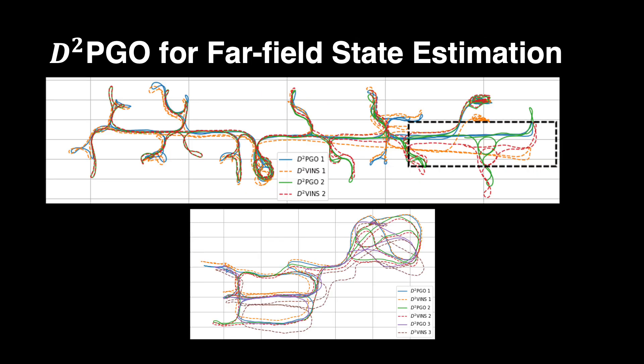As shown in the figures, D-Square VINS drifts after a long time of running due to the nature of VIO. D-Square PGO shows good global consistency in estimating trajectories.